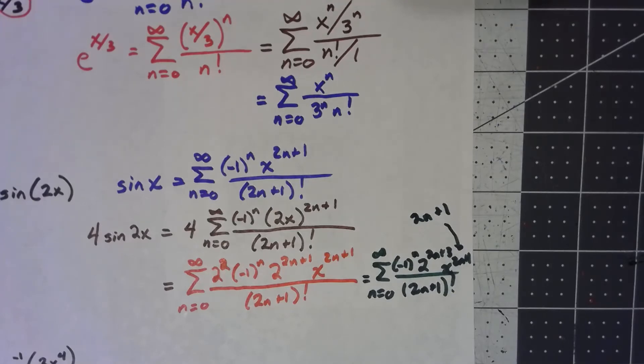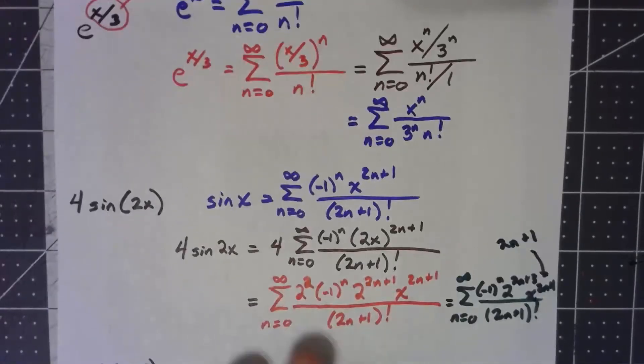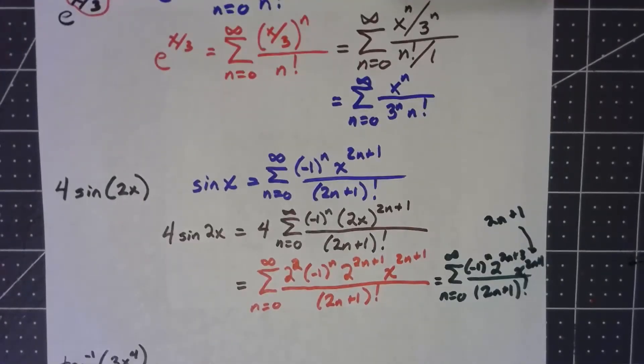And there we go. There's a power series for 4 times the sine of 2x. Easy. One more, though it's basically going to be the same thing.